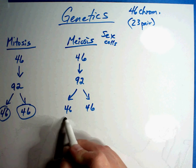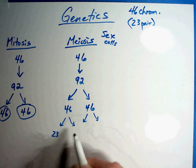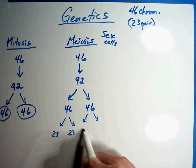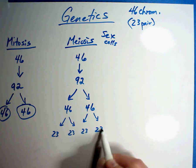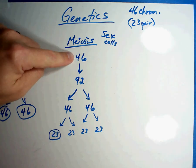But then something happens after that. It splits again, in which you get 23, 23, 23, 23. This has half the chromosomes of the original. So here's what happens.